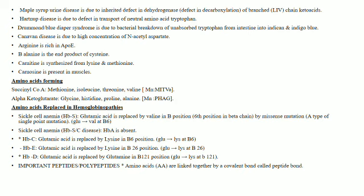In hemoglobinopathies: sickle cell anemia (HbS) has a single point mutation — glutamic acid replaced by valine at beta-chain position 6, a missense mutation. Adult hemoglobin (HbA) is absent in sickle cell anemia. In HbC, glutamic acid is replaced by lysine at B6 position. In HbE, glutamic acid is replaced by lysine at B26 position. In HbD, glutamic acid is replaced by glutamine at B121 position.